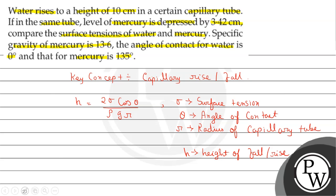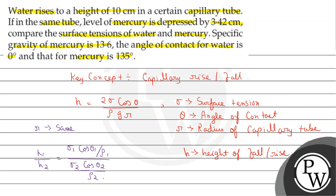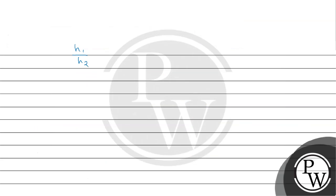From the formula, the factor of 2 is constant, and since the radius r is the same for both mercury and water, r is also constant. So we can write a new ratio formula: h1 divided by h2 equals sigma1 cos theta1 divided by rho1, all divided by sigma2 cos theta2 divided by rho2. Here h1 is the height of rise of water and h2 is the depression of mercury. Rearranging: h1/h2 equals sigma1 over sigma2, multiplied by cos theta1 over cos theta2, multiplied by rho2 over rho1.